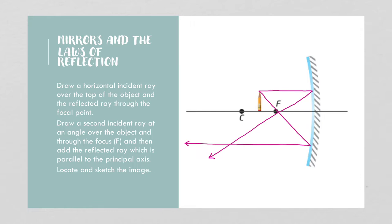You'll locate the image where those two lines meet. The bottom of the image is always going to rest on the principal axis. So we're going to draw this little object now — here's our pencil.